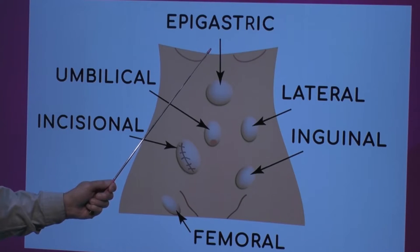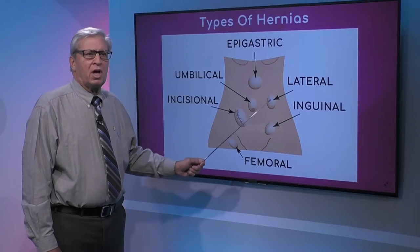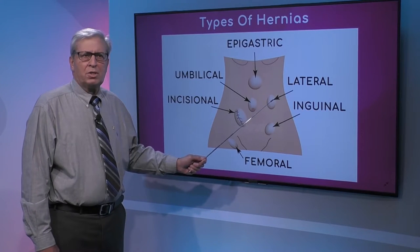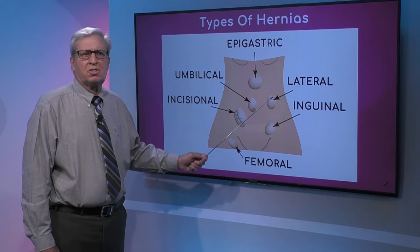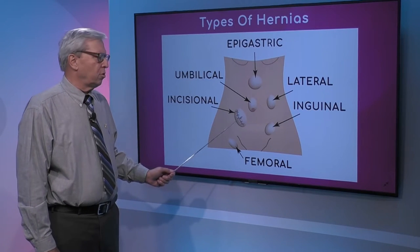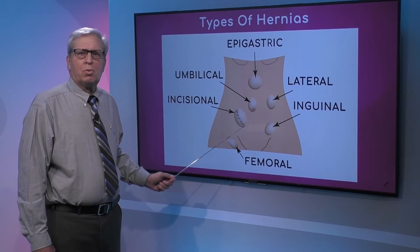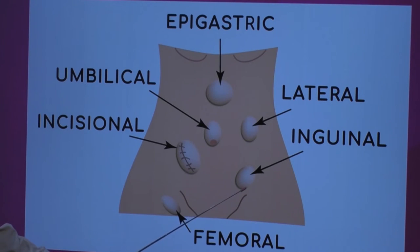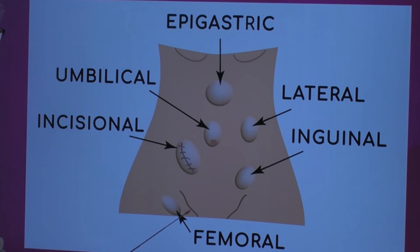Lateral hernias are on the side of the abdominal wall; they are not quite as common unless somebody had an incision there in the past. There's also a demonstration of an incisional hernia here, which is probably in the location where someone had an appendix incision. The most common are the inguinal hernias, which are down here in the groin crease in this location.